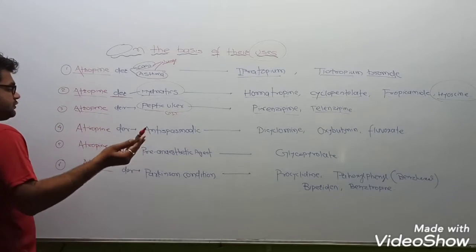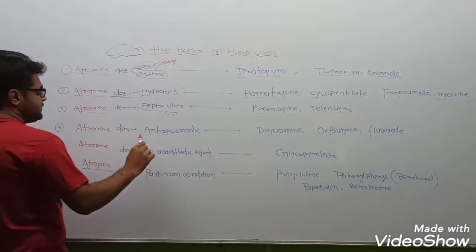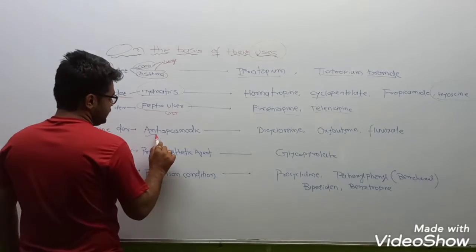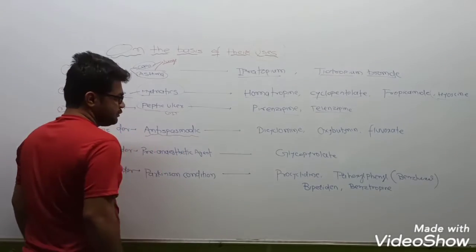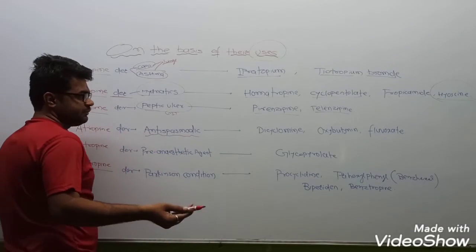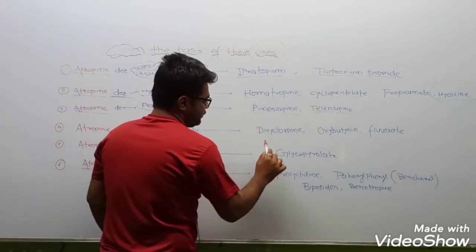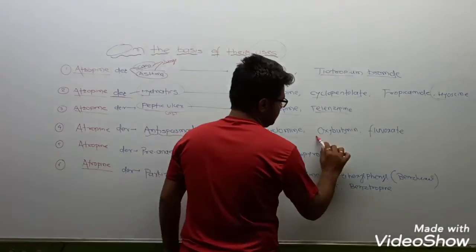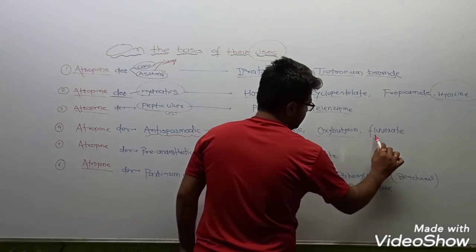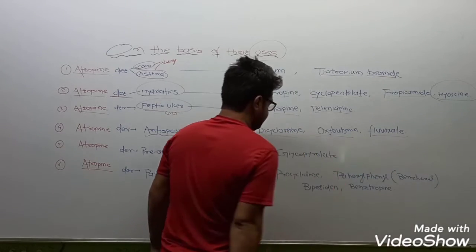Atropine derivatives which are used as antispasmodic agents: particularly dicyclomine, oxybutynine, and glycopyrrolate.